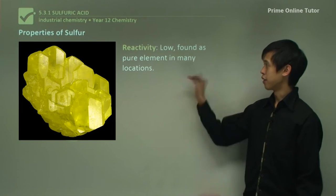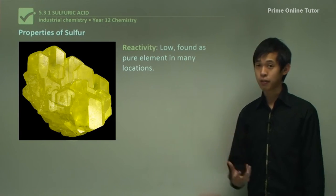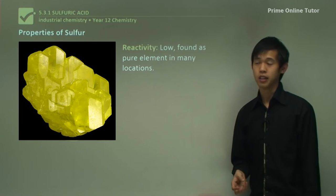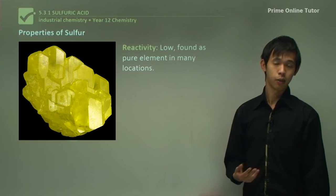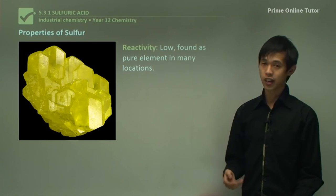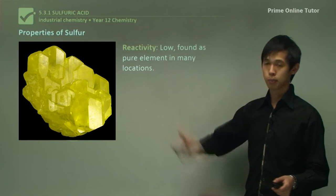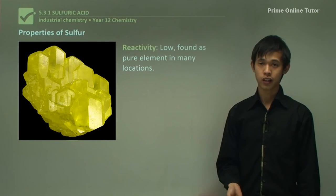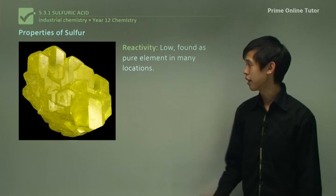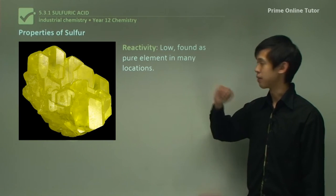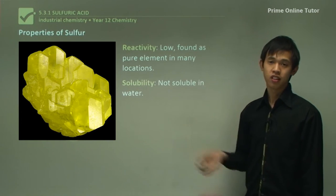The reactivity of sulfur is low, so it can be found as a pure element in many locations, which is a rarity among elements — you rarely find pure elemental forms just lying around in the ground. And it's not soluble in water.